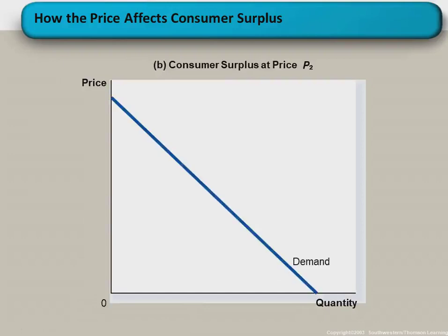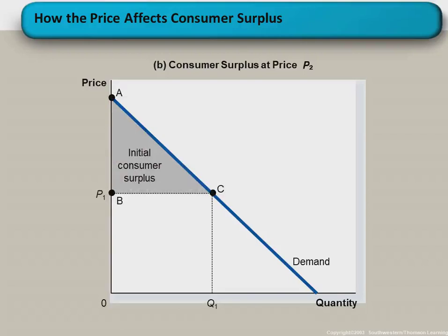Now suppose the price of a commodity reduces. What happens to the surplus? With the initial setup where P1 is the price and triangle ABC defines the initial consumer surplus, if the price reduces to P2, according to the law of demand the lower the price, the higher the quantity demanded — holding other factors constant. This means those who could not afford at price P1 will now be able to buy the commodity and join the market.